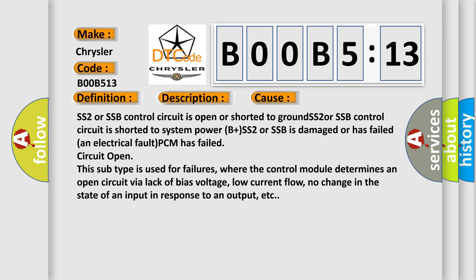This subtype is used for failures where the control module determines an open circuit via lack of bias voltage, low current flow, no change in the state of an input in response to an output, etc.